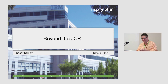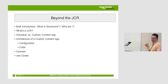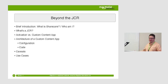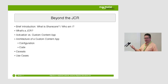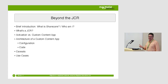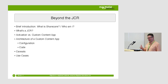Beyond the JCR — that's going to be the most interesting part of the whole presentation. Brief overview of what we're going to talk about: first I'll introduce ShareCare, just perfunctory. Then JCR — what is a JCR? We'll talk about activation versus custom content apps, dig into the custom content apps themselves — the configuration and the code. We'll talk about what it takes to make a custom content app, some caveats, and then some use cases.